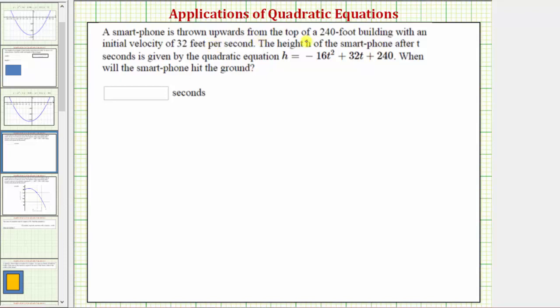A smartphone is thrown upward from the top of a 240-foot building with an initial velocity of 32 feet per second. The height h of the smartphone after t seconds is given by the quadratic equation h equals negative 16t squared plus 32t plus 240. The question is when will the smartphone hit the ground?